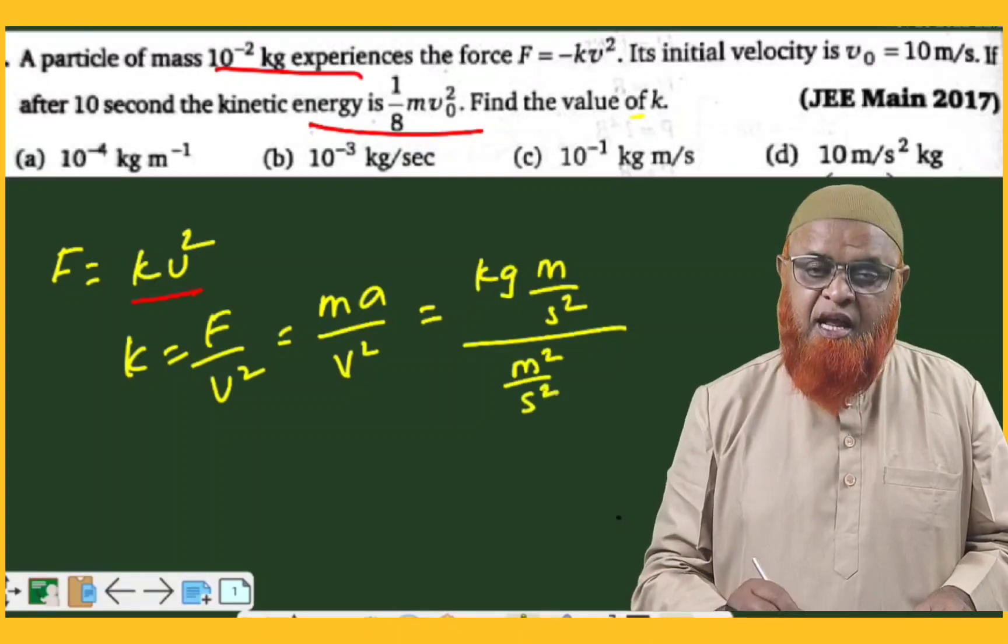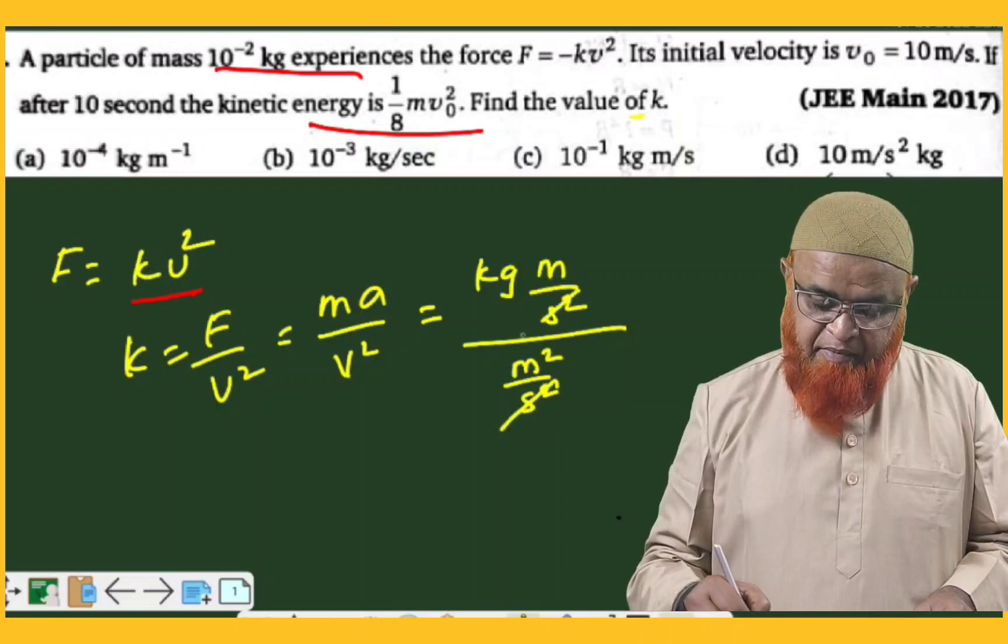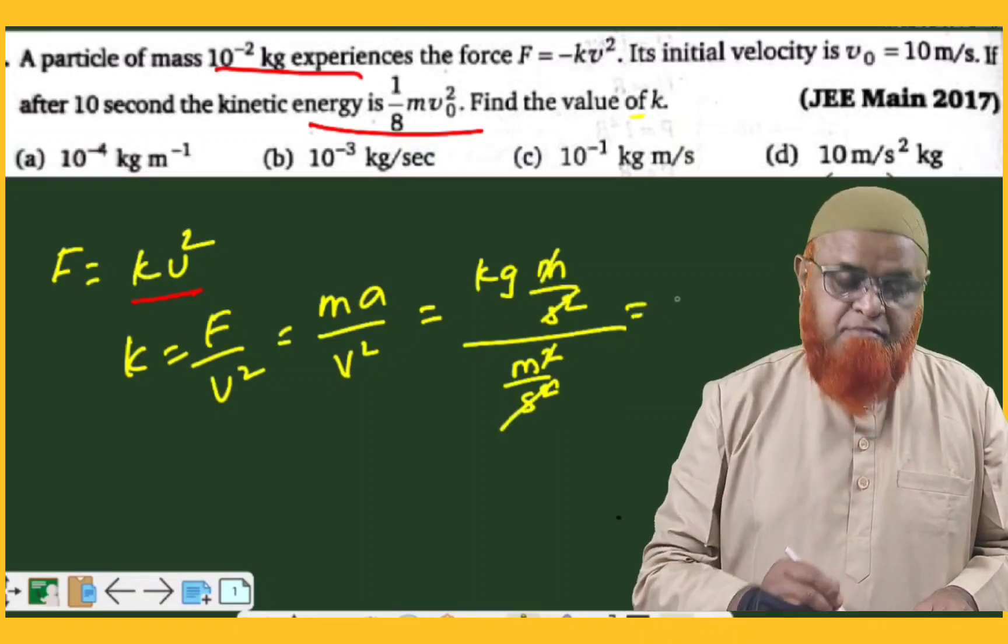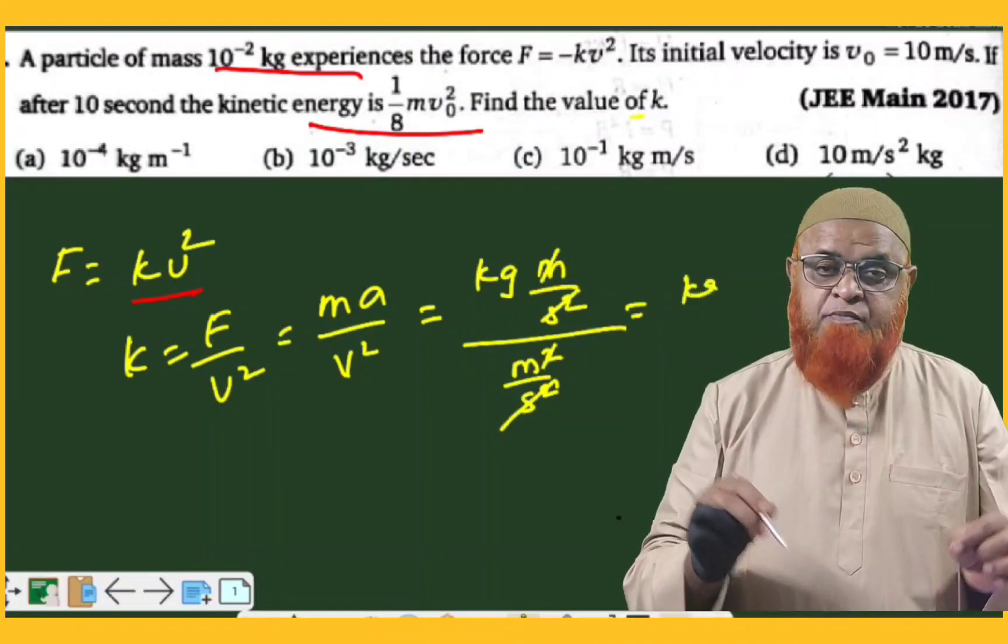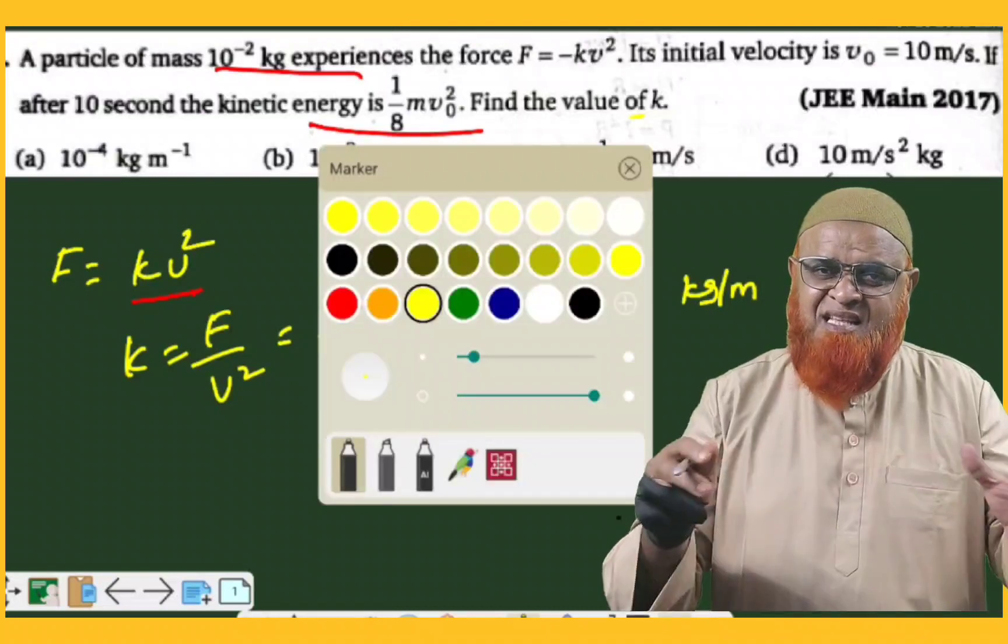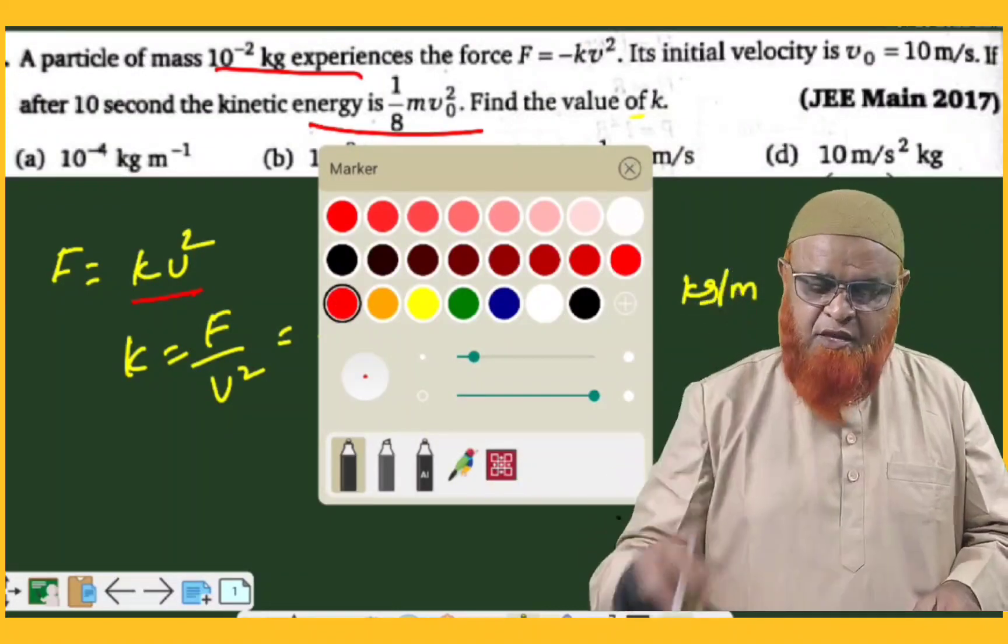So as kg per meter is left, your correct answer is going to be first option because kg meter per minus 1. By seeing the correct unit, you can judge the correct answer in fraction of seconds. Thank you very much.